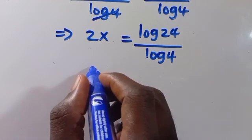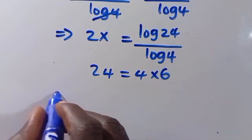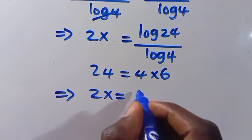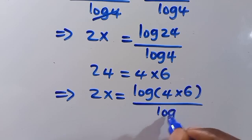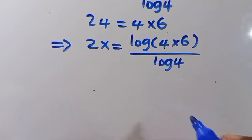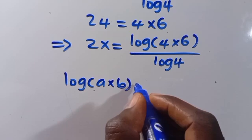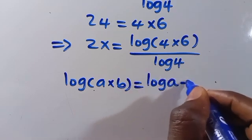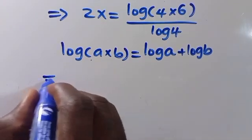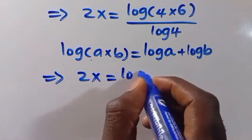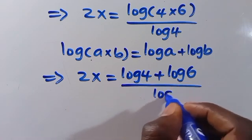At this point we can express 24 as the product of 4 times 6. Substituting, we get 2x equals log of (4 times 6) over log 4. Then recalling the log property: log of (a times b) always equals log a plus log b. So we have 2x equals (log 4 plus log 6) over log 4.